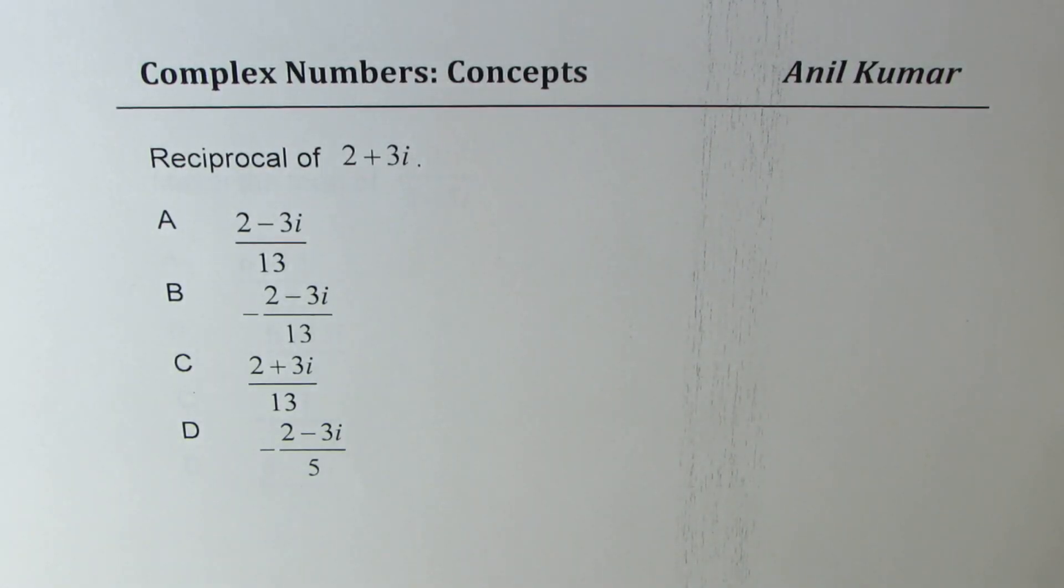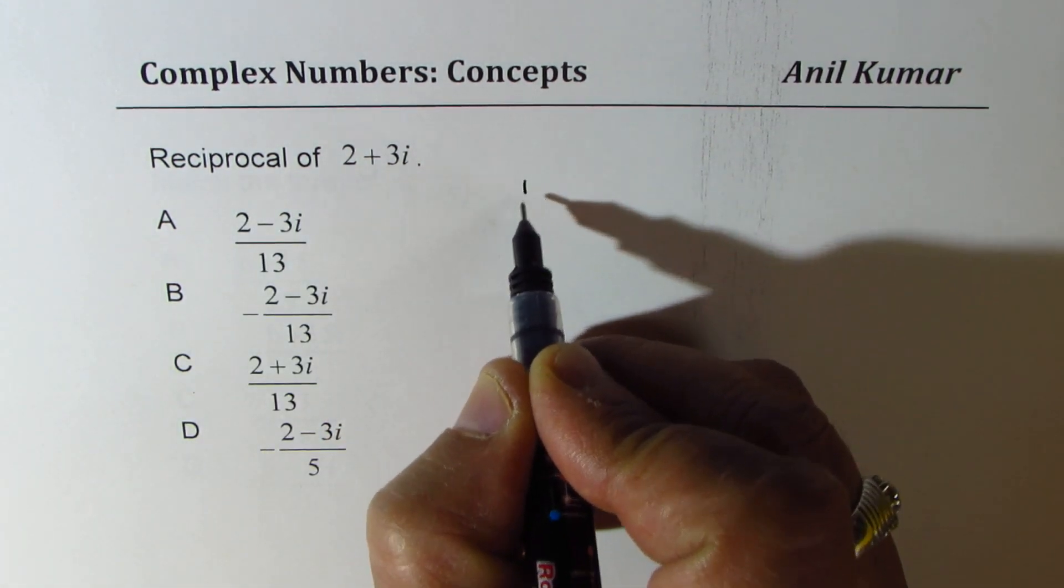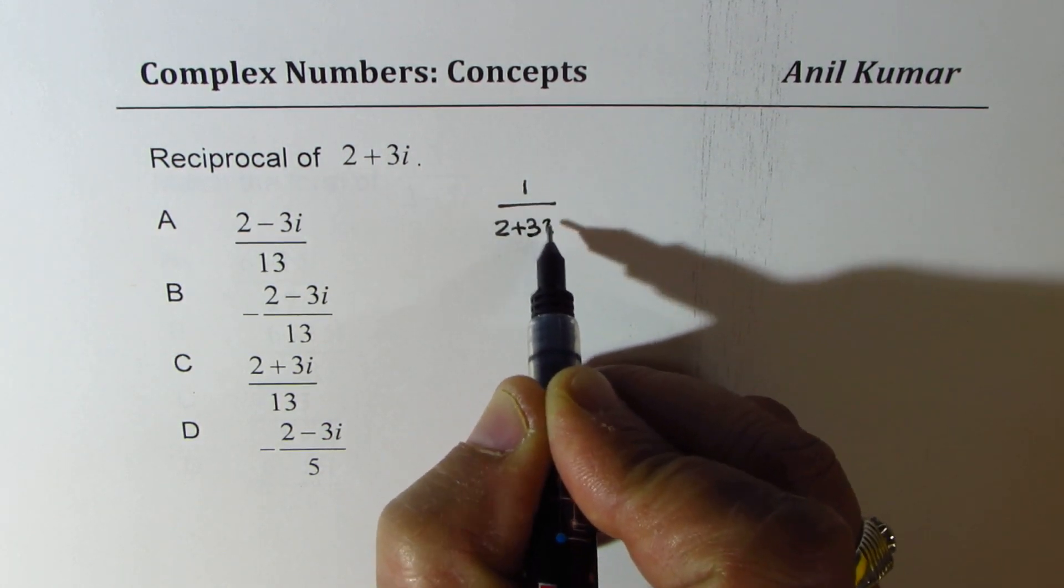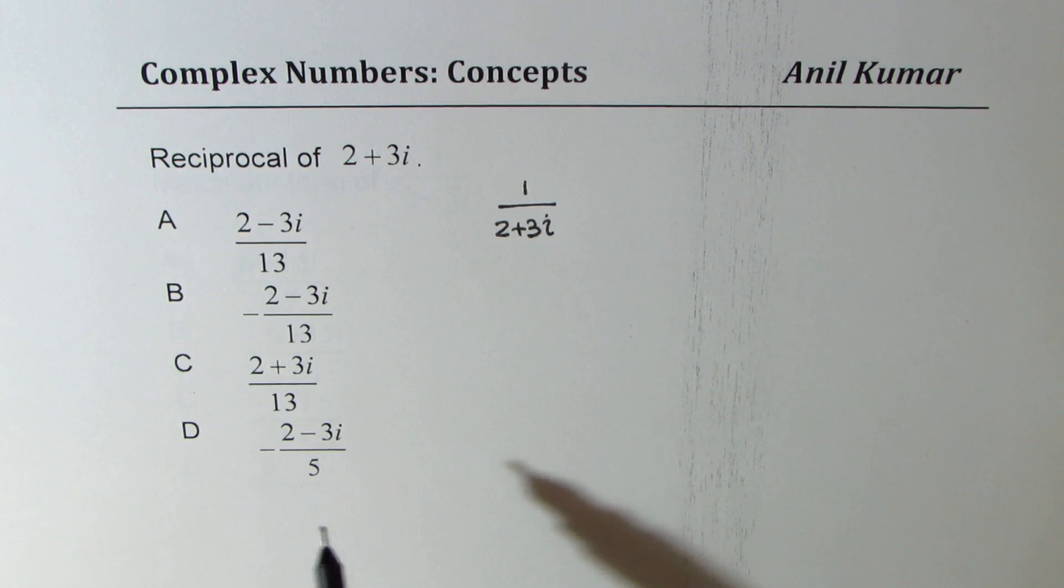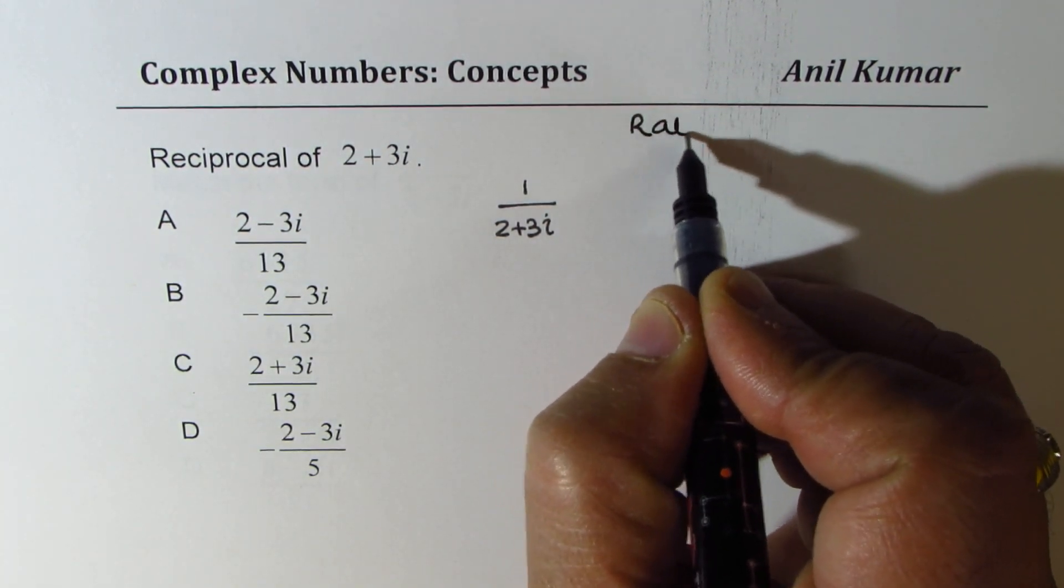Next question: you need to find reciprocal of 2 plus 3i. This is a very common question asked in many tests like SAT. Reciprocal means one over, so it is one over 2 plus 3i. That is the reciprocal. Now we need to rationalize it.